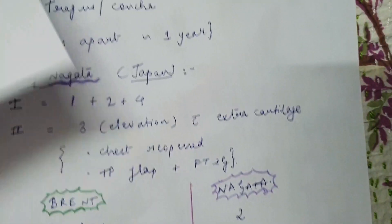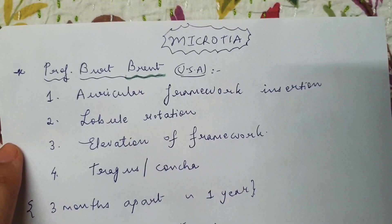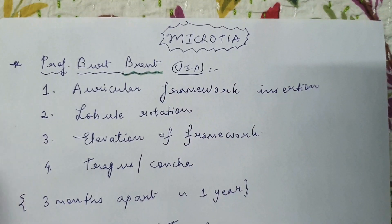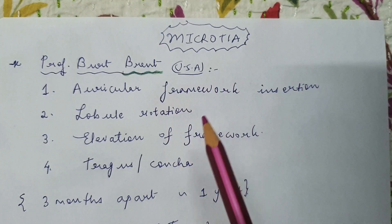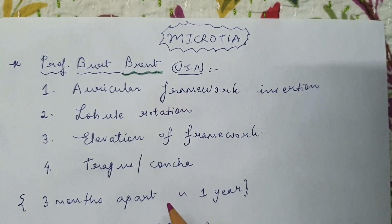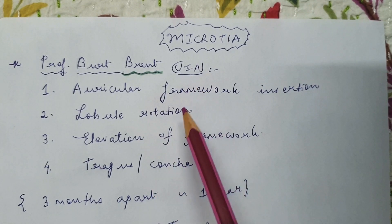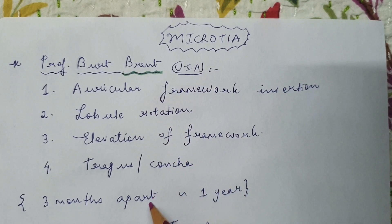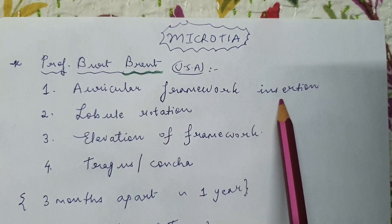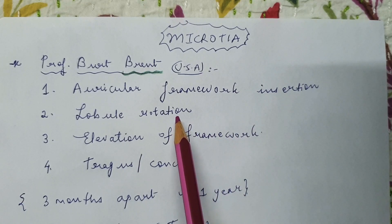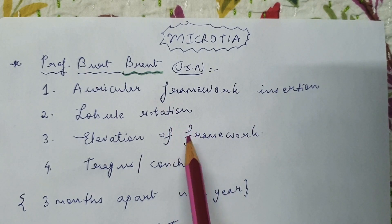The stages of microtia reconstruction have been well described by Professor Brent from the US, who describes four stages typically three months apart. Beginning at age seven to eight, all stages usually require about one year to complete. In the first stage there is auricular framework insertion; in the second stage, lobule rotation if an existing lobule is present; third is elevation of the entire framework; and fourth is the tragus and concha reconstruction.